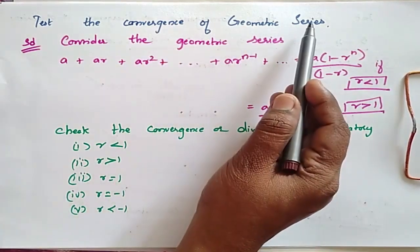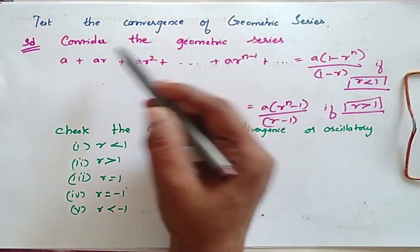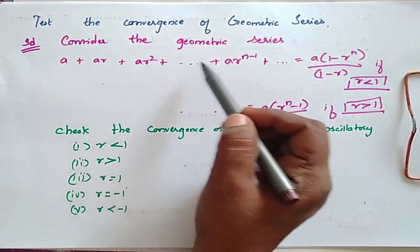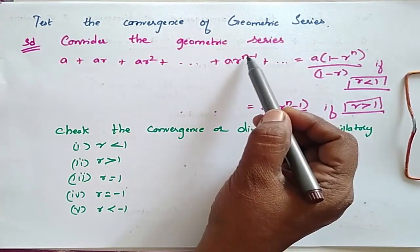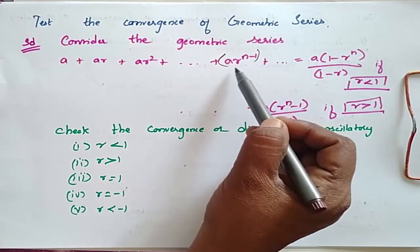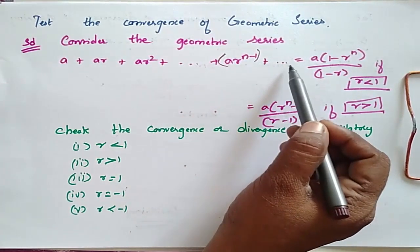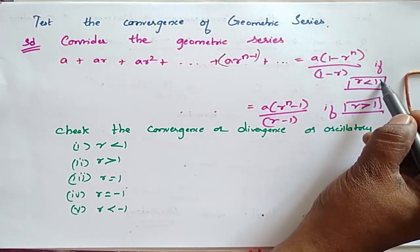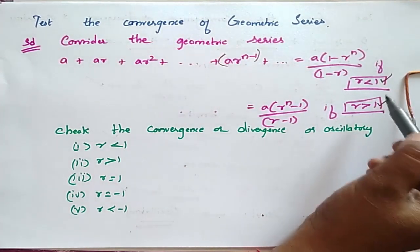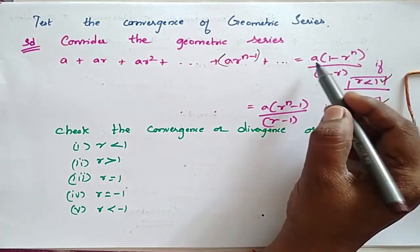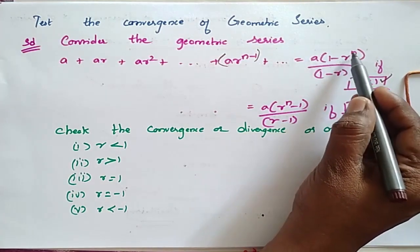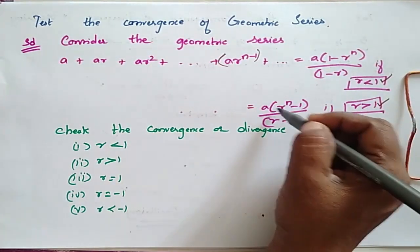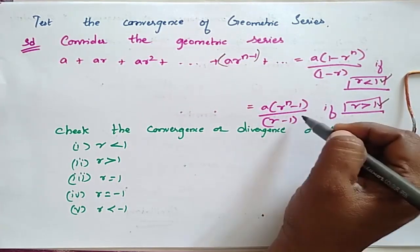We will test the convergence of the geometric series. The geometric series is a + ar + ar² and so on. The general term is ar^(n-1). We have two possibilities: where r is less than 1, giving the sum as a(1 - r^n)/(1 - r), and where r is greater than 1, giving the sum as a(r^n - 1)/(r - 1).